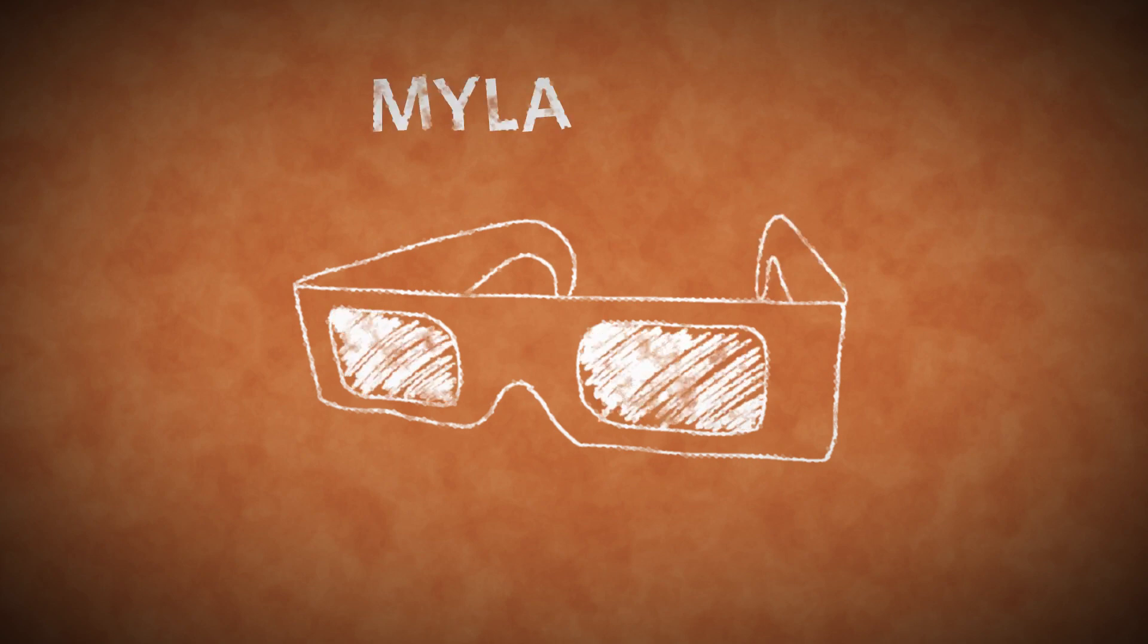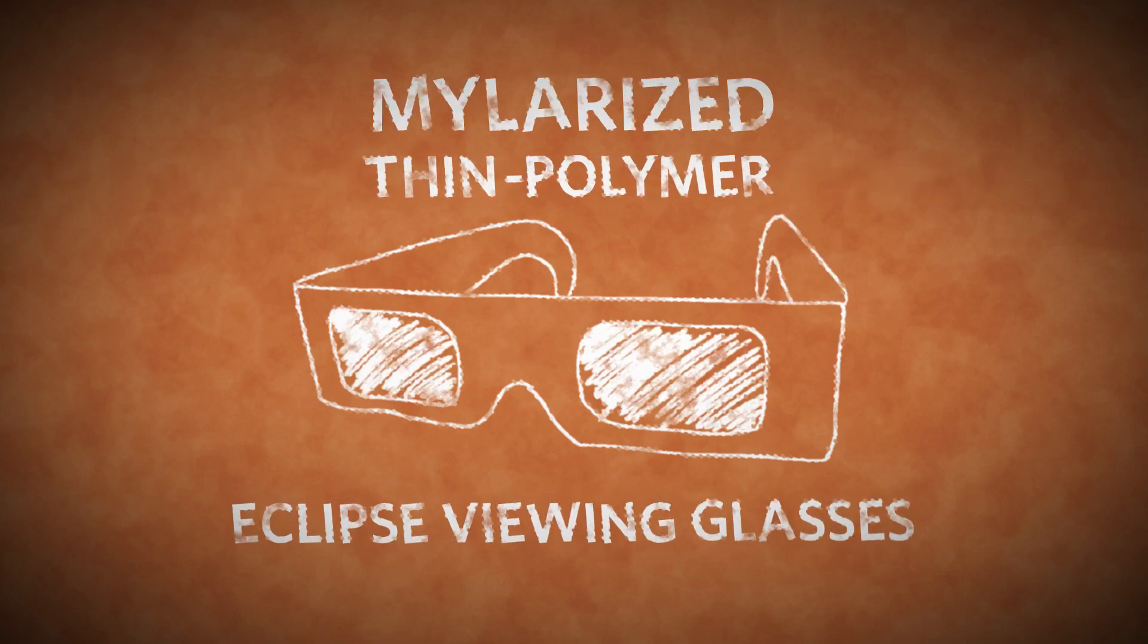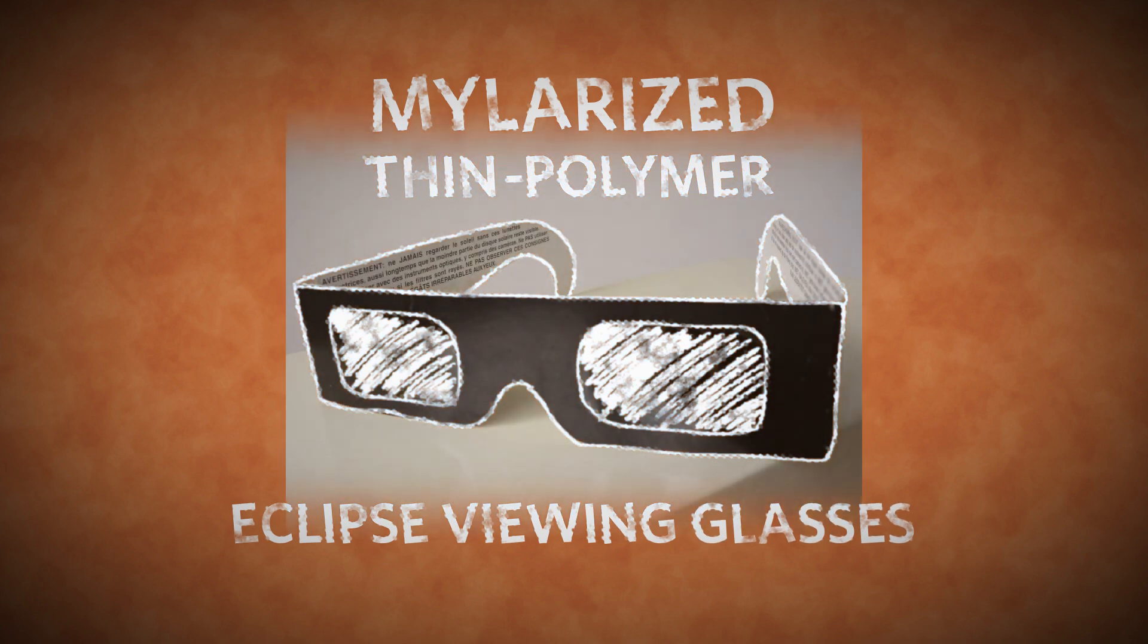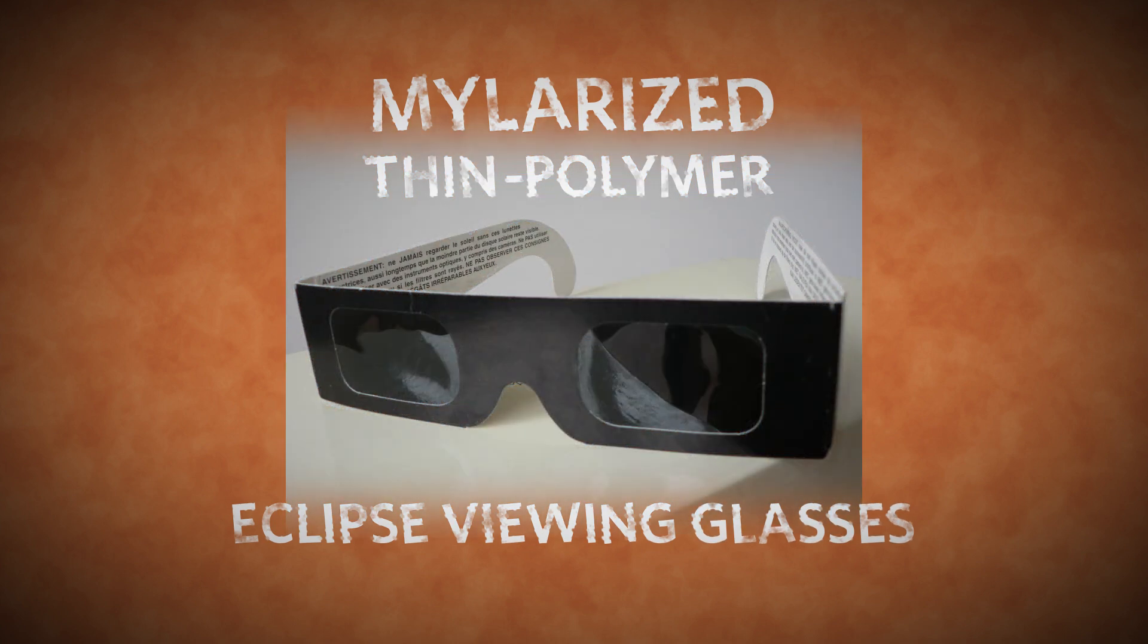Proper filters are specifically designed for observing the sun. The best options include metalized or thin polymer eclipse viewing glasses, but make sure that they're in good condition, with no wrinkles or pinholes.